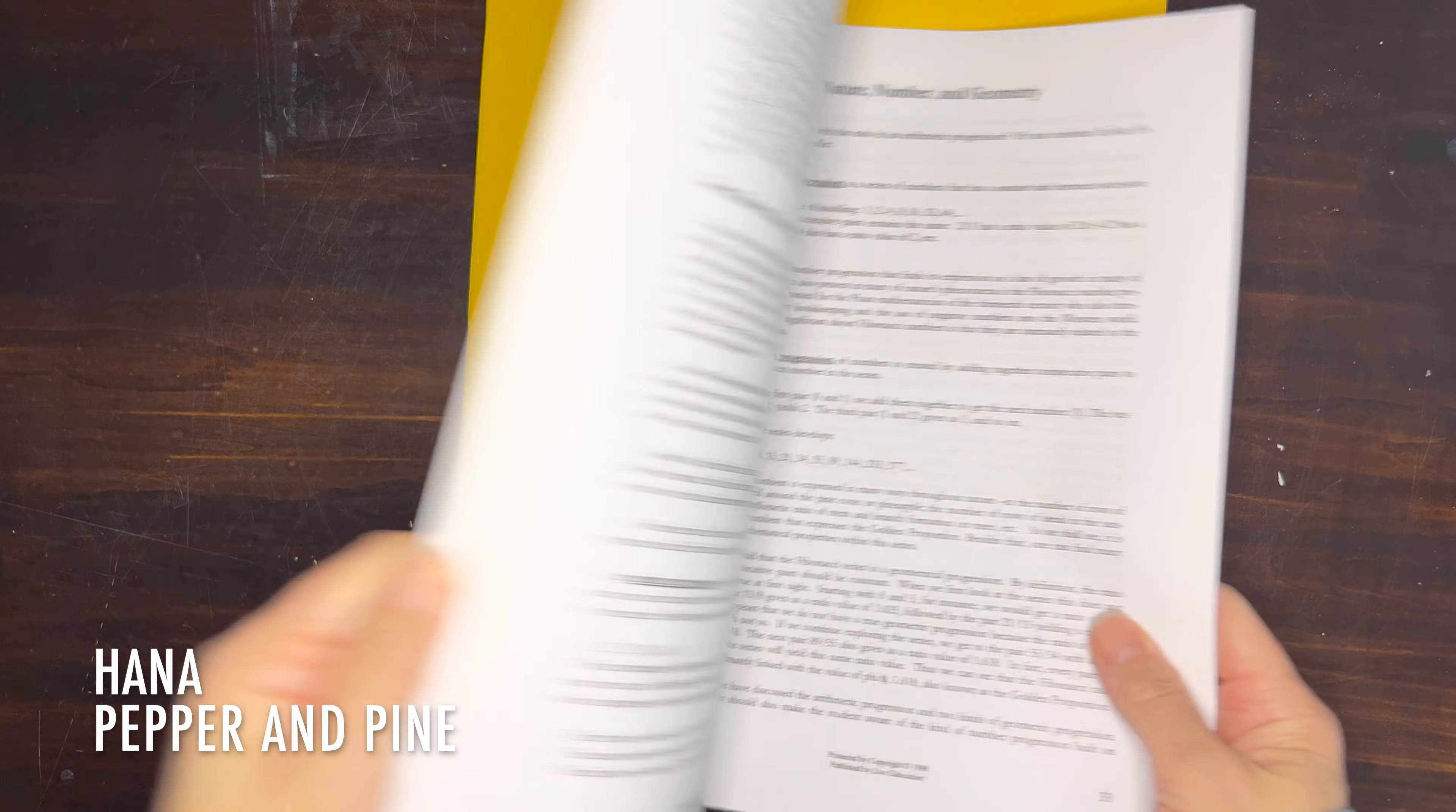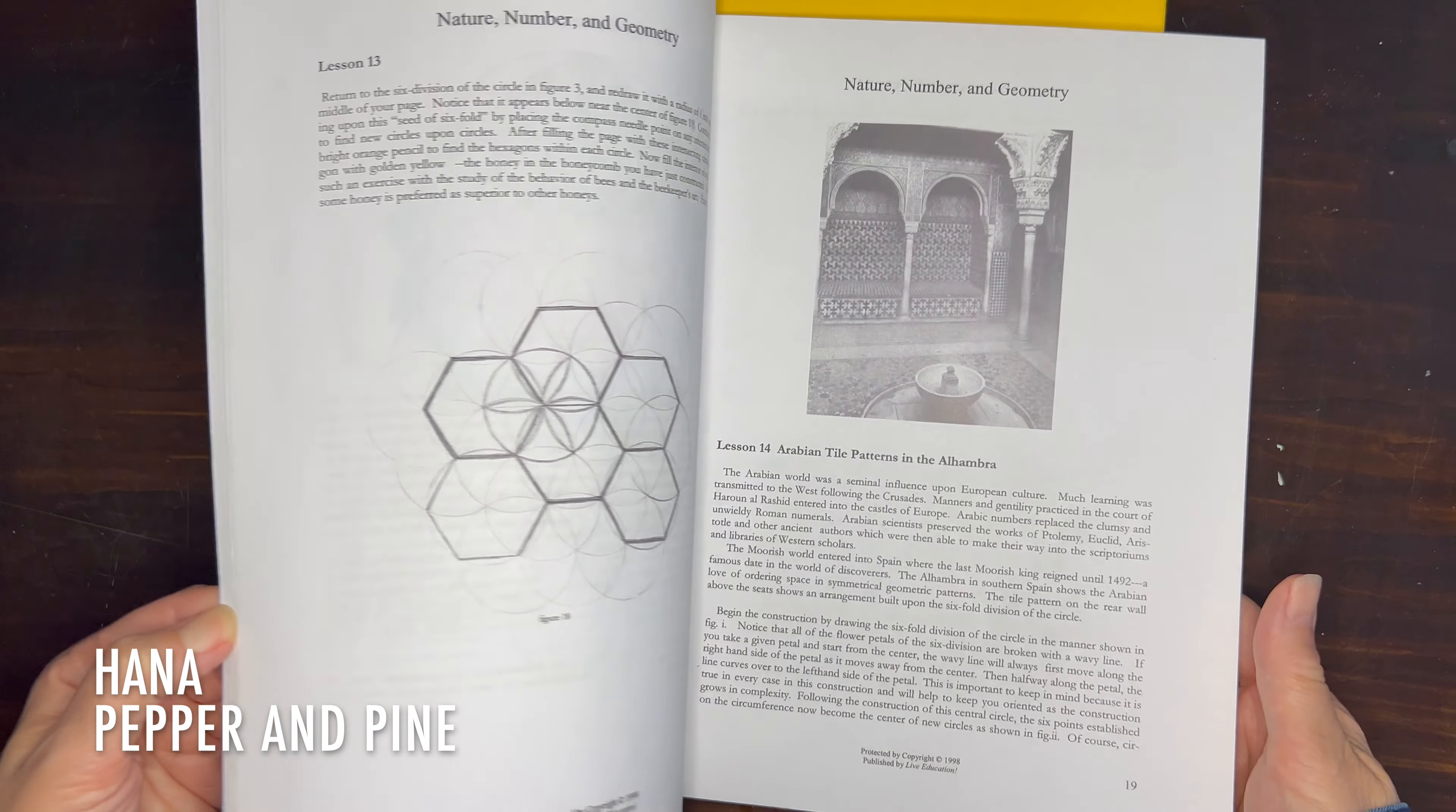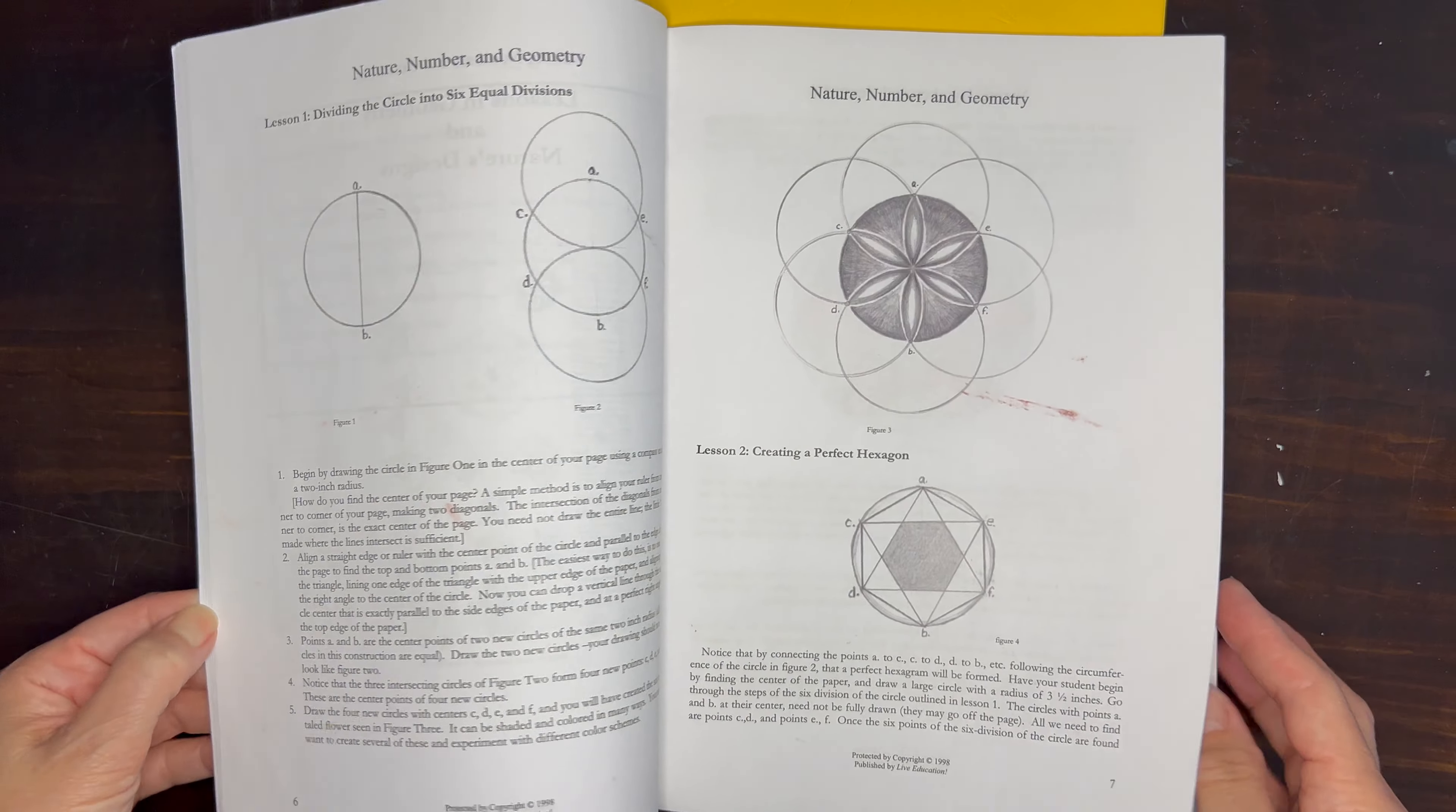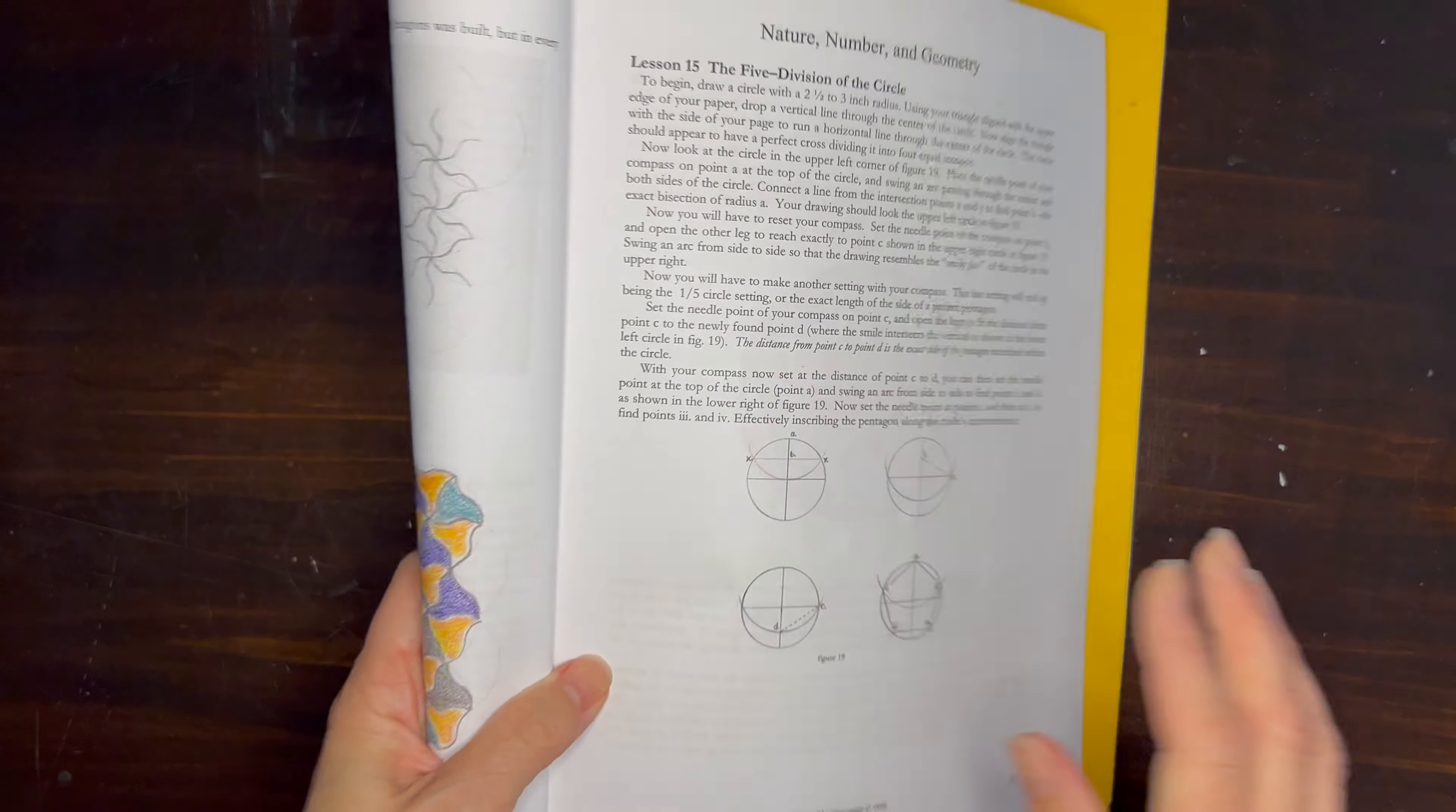Hi everybody, my name is Hannah and this is Pepper and Pine. I have a geometry lesson to share with you today. We're working through our live education Waldorf curriculum and today's lesson is working on five division of a circle in order to create the perfect pentagon.